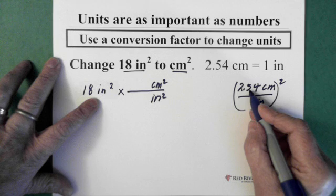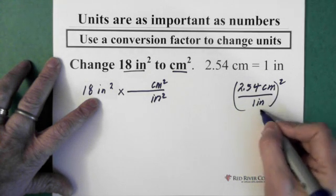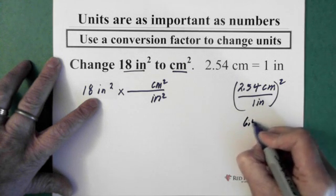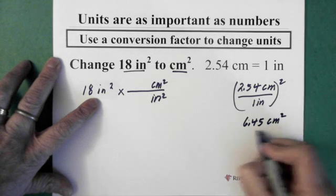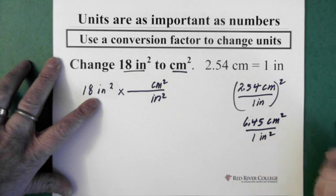The 2.54 gets squared, centimeters get squared, the 1 gets squared, and the inches get squared. So, in the end, I get 6.45 centimeters squared divided by 1 inch squared. And there's my conversion factor.